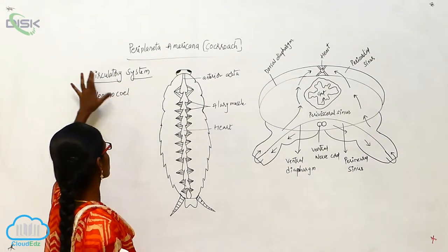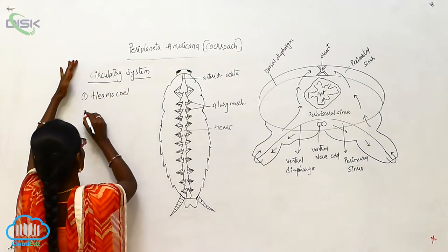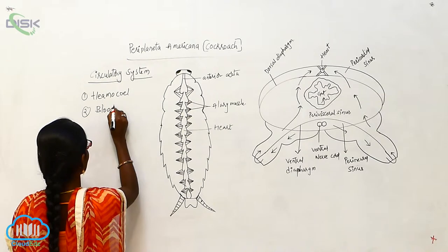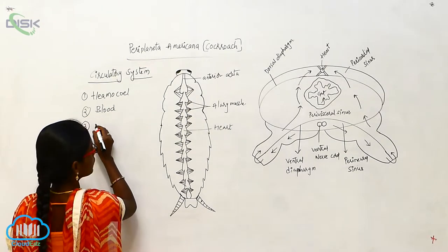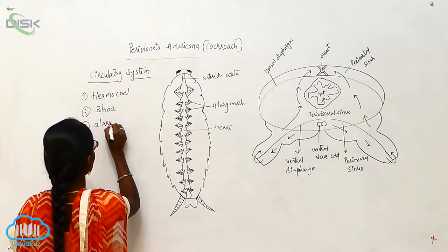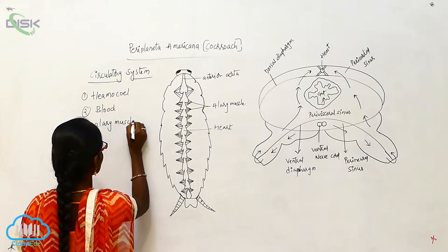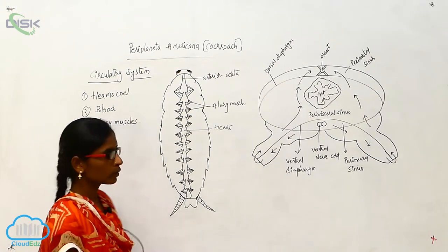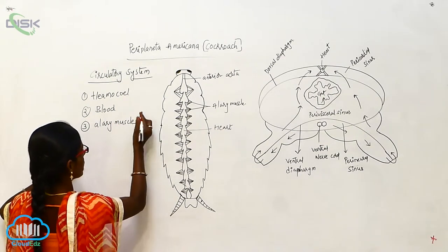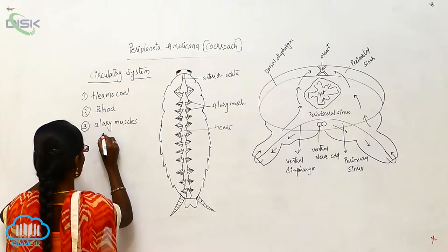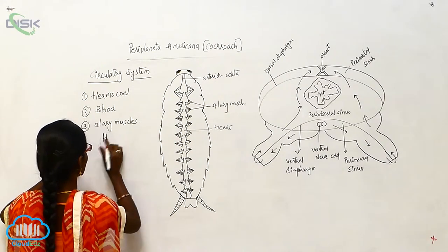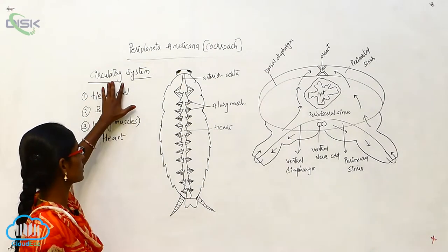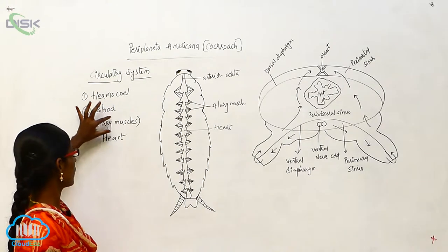Periplaneta circulatory system. The circulatory system consists of hemocele, blood, and heart. It also includes ailary muscles. So these are the parts of the circulatory system.